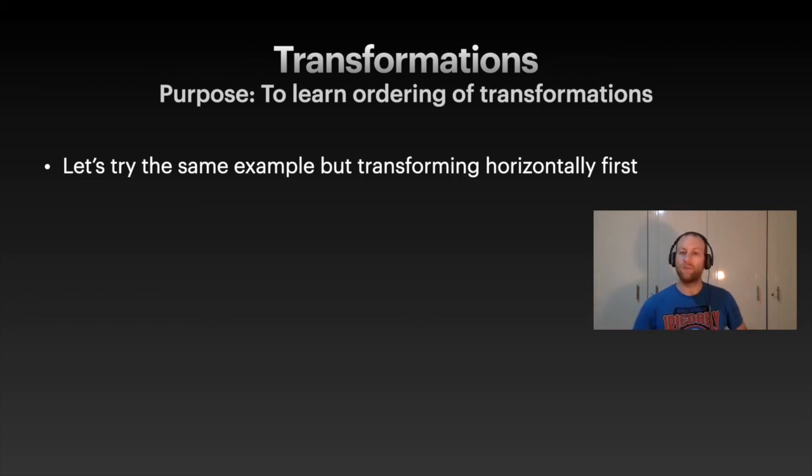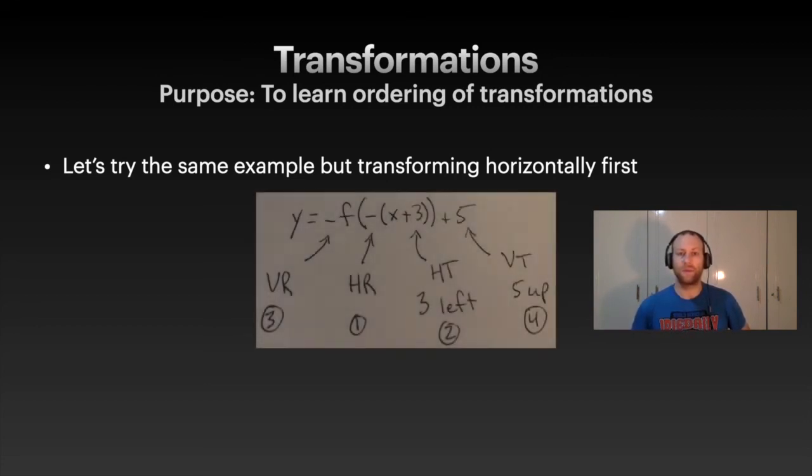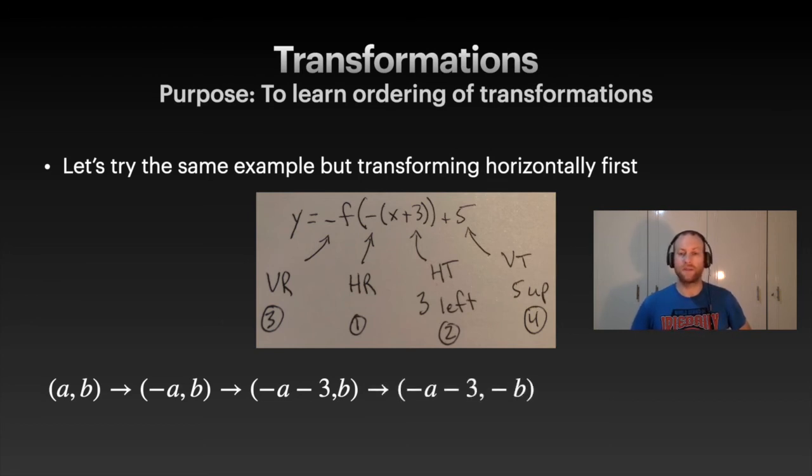Let's try the same one but do the horizontal first, see what would happen. Notice here we are going to do the horizontal first instead of the vertical. We take that same point (a, b). First let's do horizontal, so we get −a, that'll be −a − 3. Then we'll do the vertical, so vertical reflection gives us the −b, and then five up. It's the exact same, so it doesn't matter which one you do first, you get the exact same answer.